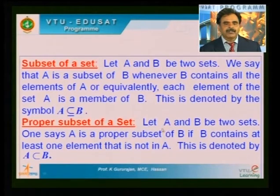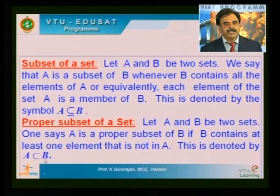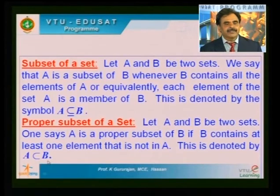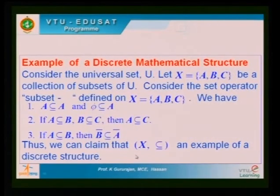Coming to the proper subset: A is a proper subset of B whenever A is a subset of B and B contains at least one element more than A — meaning B is larger than A. In the case of a subset, A is a subset of A itself, but we never say that B is a proper subset of itself. A good example: there is no way of putting two boxes of the same size one into another.